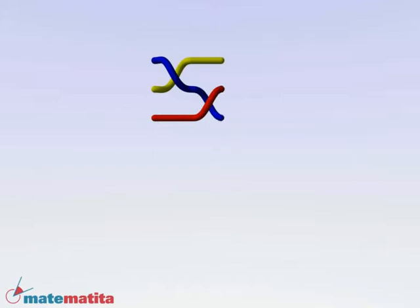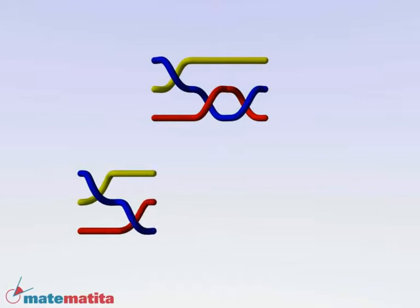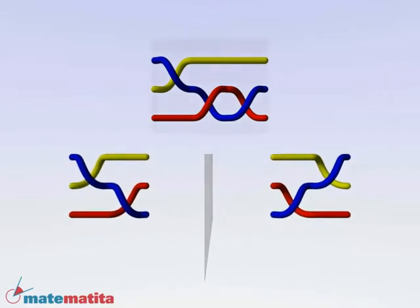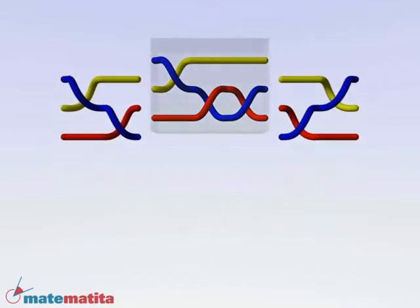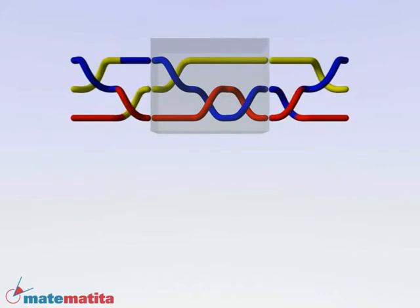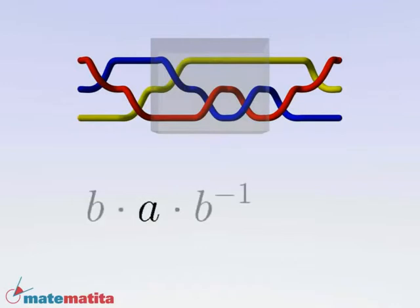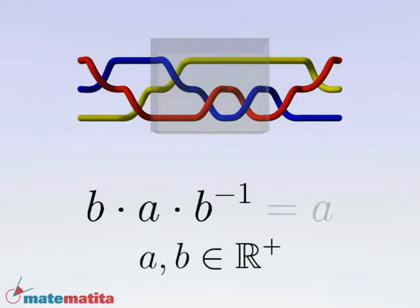We introduce a new operation called conjugation. Choose a braid. Take another one and its inverse. And compose them in this manner: one on the left and the inverse on the right. The new braid is called a conjugate of the first. Note that the corresponding operation with numbers will not change the starting number. The product is commutative.